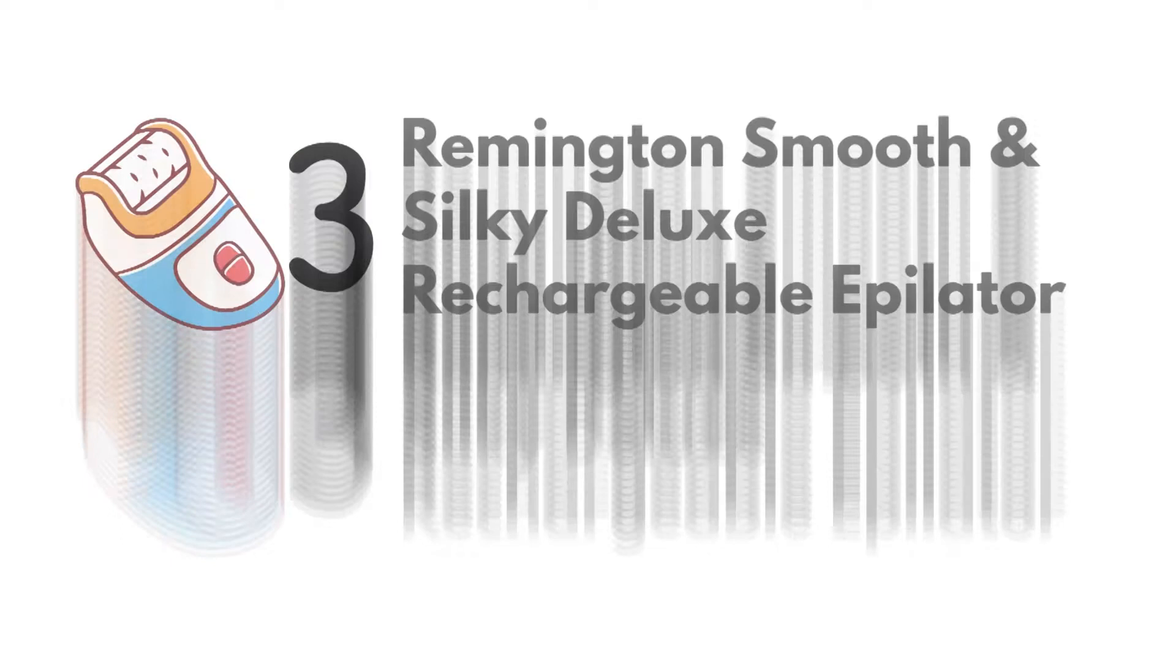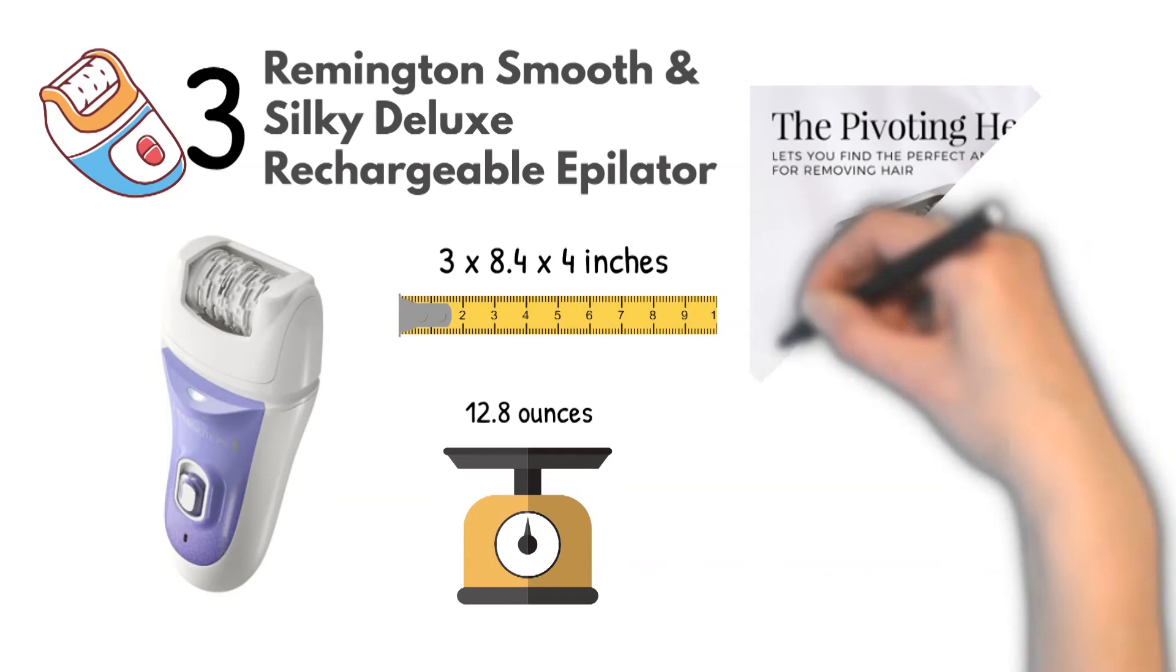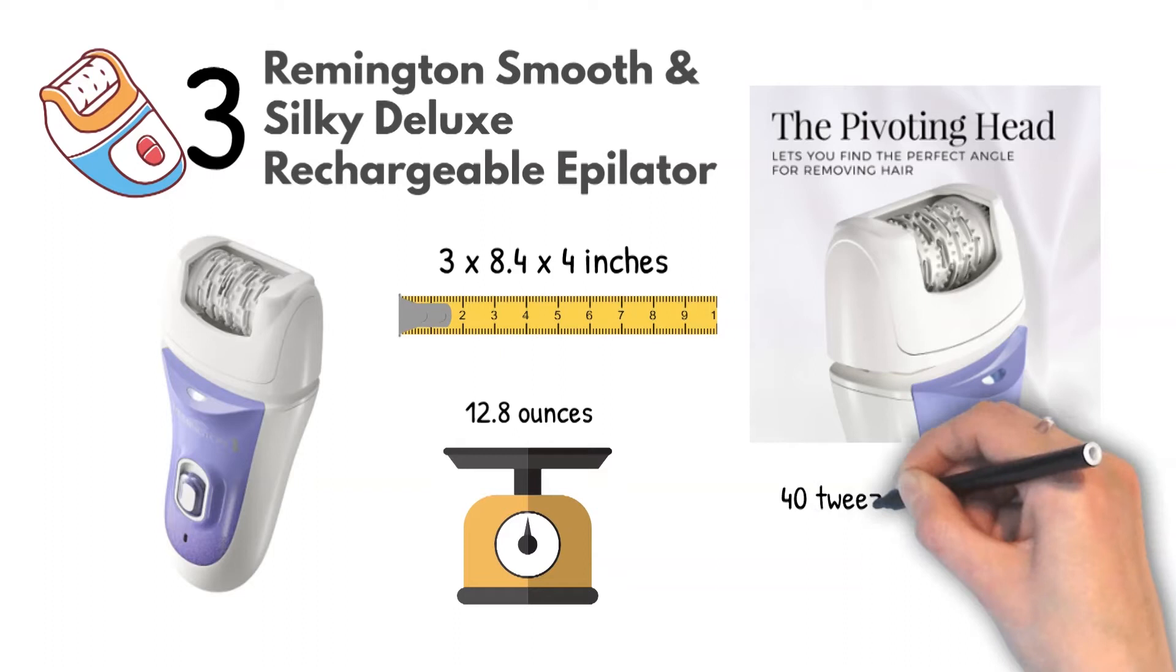At number 3, we have the Remington Smooth & Silky Deluxe Rechargeable Epilator. Dimensions of this product are 3 by 8.4 by 4 inches and it weighs 12.8 ounces. The Remington Smooth & Silky Deluxe Rechargeable Epilator features the pivoting head which stays close to the skin, allowing the 40 tweezers to quickly remove even the shortest hairs straight from the root.